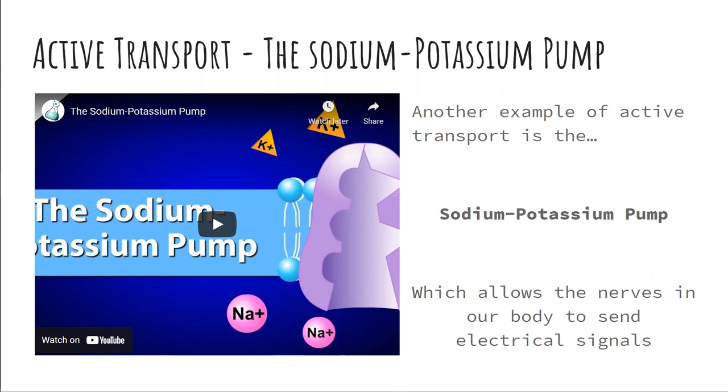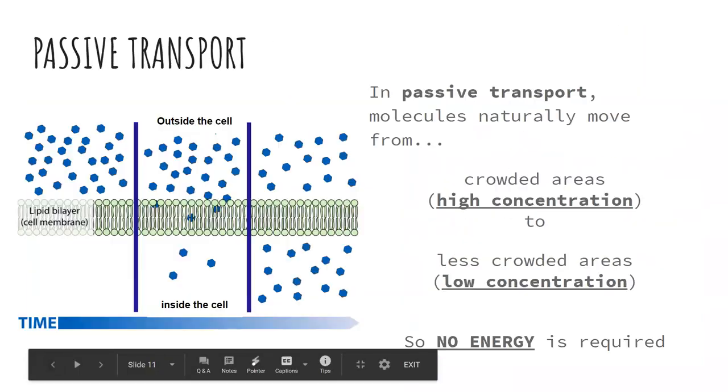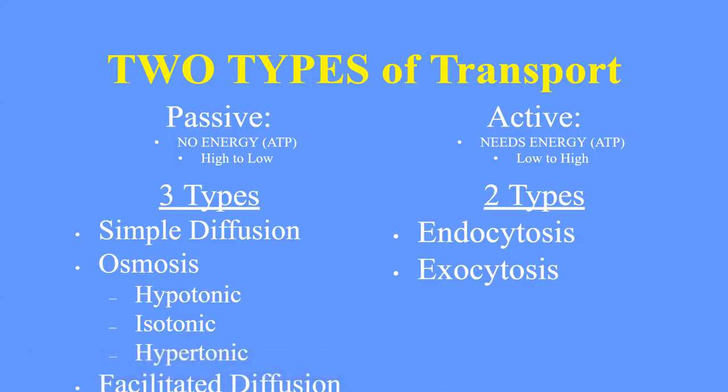Two things to remember before we wrap up: the two types of transport the cell membrane performs are passive and active transport. Passive transport requires no energy, no ATP, and moves particles from an area of high concentration to low concentration. Active transport requires energy and ATP because it moves molecules from an area of low concentration to high concentration. Both types of transport are done by the cell membrane, the lipid bilayer, or the plasma membrane. Thanks for watching.